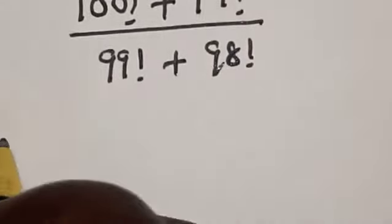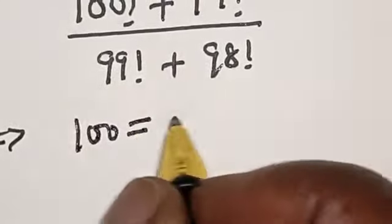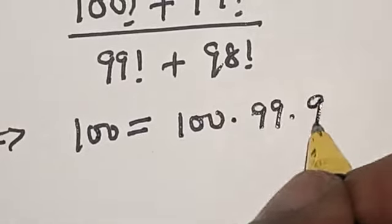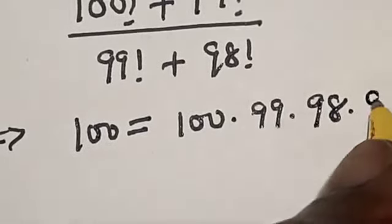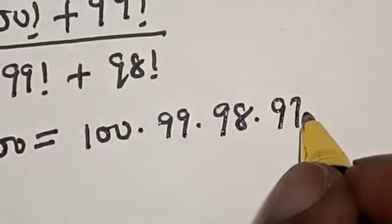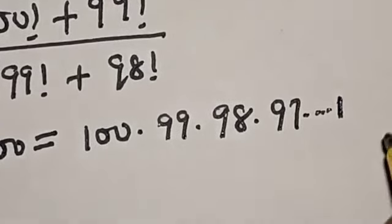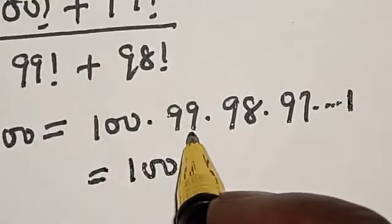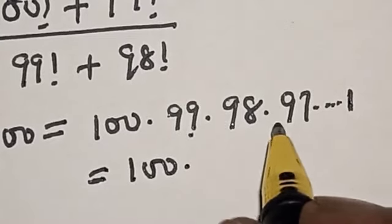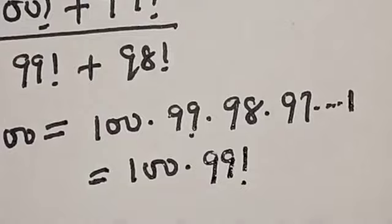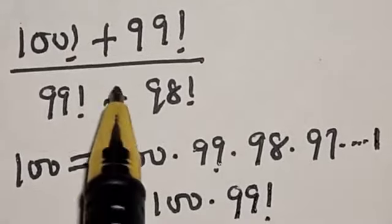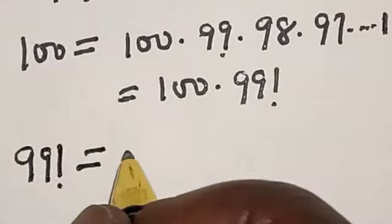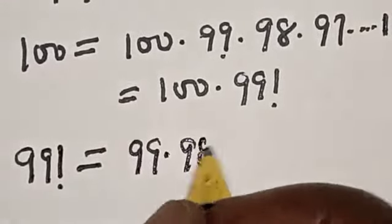This implies that 100 factorial is equal to 100 multiplied by 99 multiplied by 98 multiplied by 97... which is the same thing as 100 multiplied by 99 factorial. Then we also have 99 factorial, which is equal to 99 multiplied by 98 multiplied by 97...